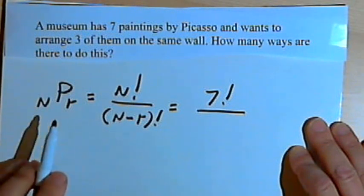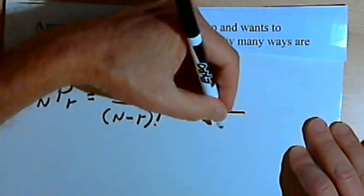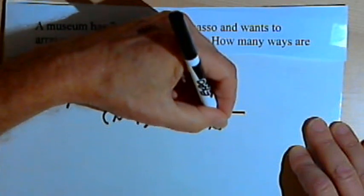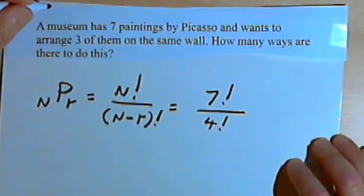So N minus R would be 7 minus 3. And 7 minus 3 is 4. So that means I've got 4 factorial as the denominator.